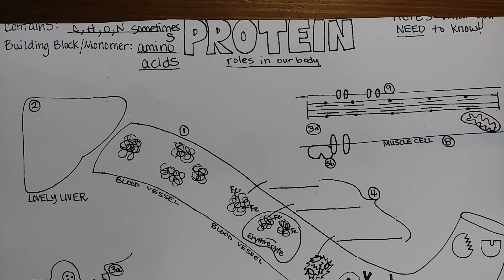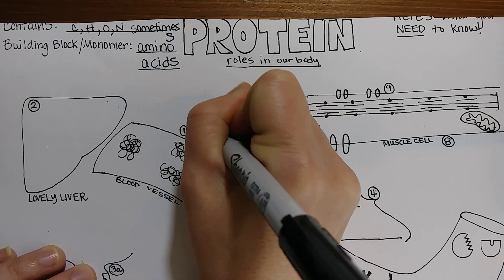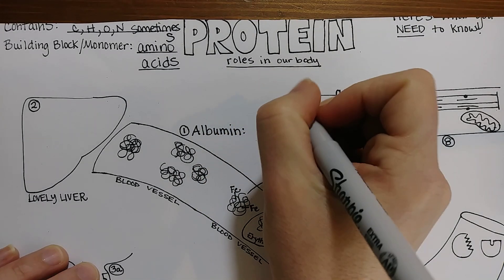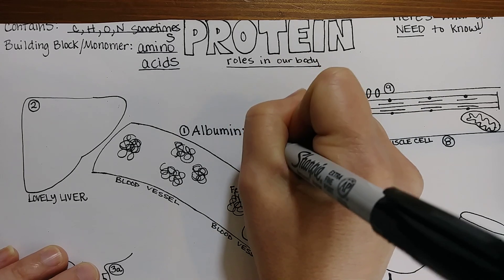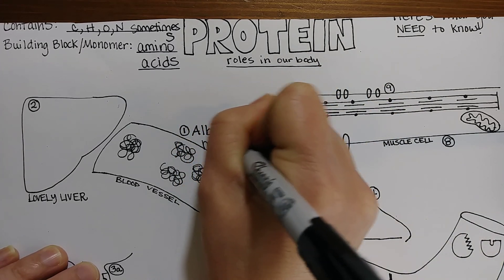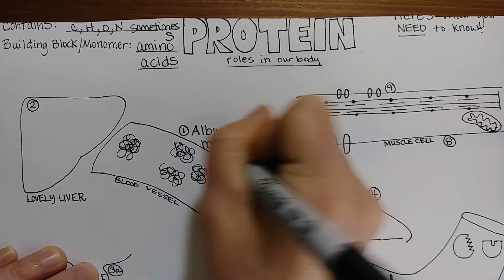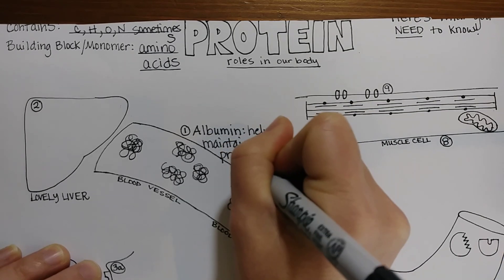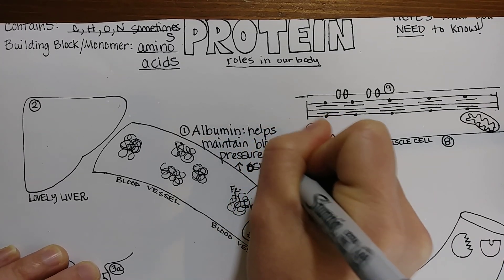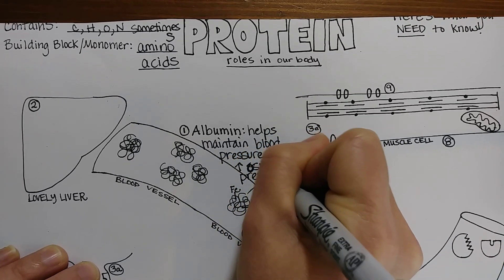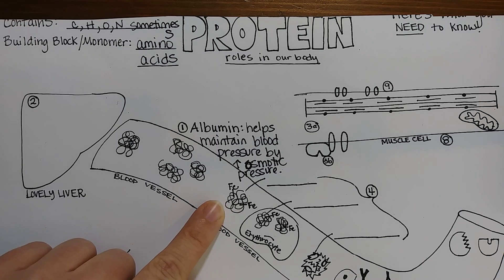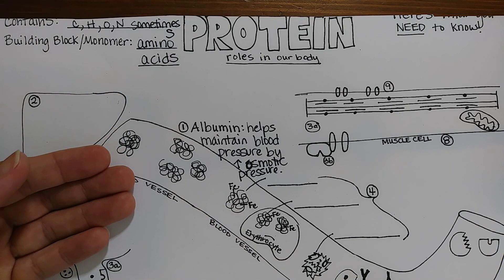The first role I want to talk about is albumin. Albumin is a very important protein that helps to maintain blood pressure, and the way it does that is by increasing osmotic pressure. It makes it so that there's more solute in the blood vessel, and then that solute causes water to be pulled in to the blood vessel.